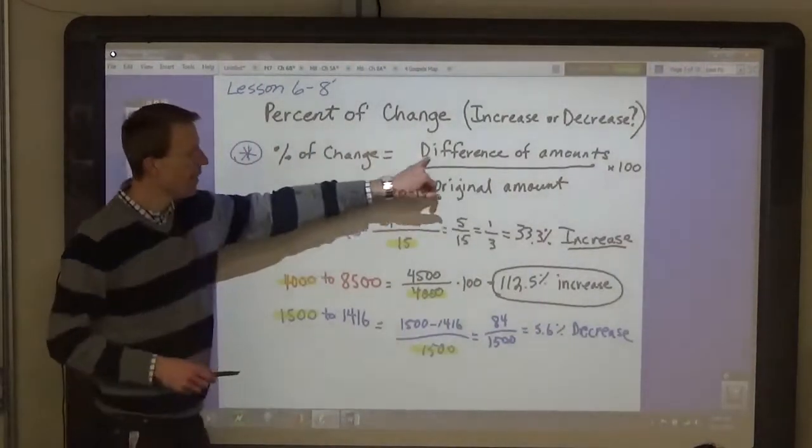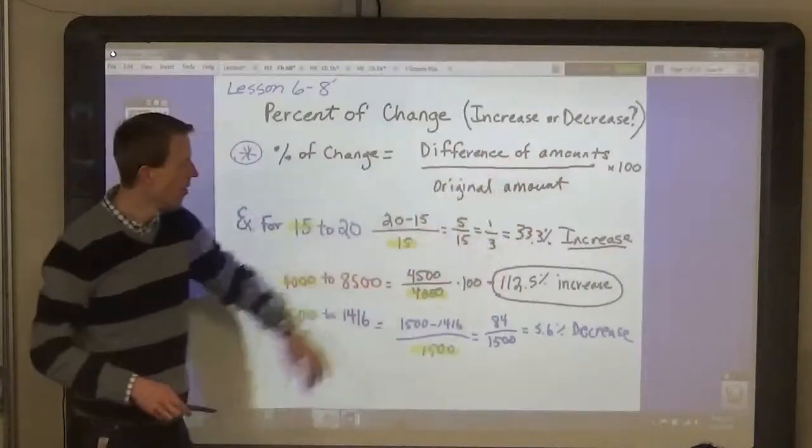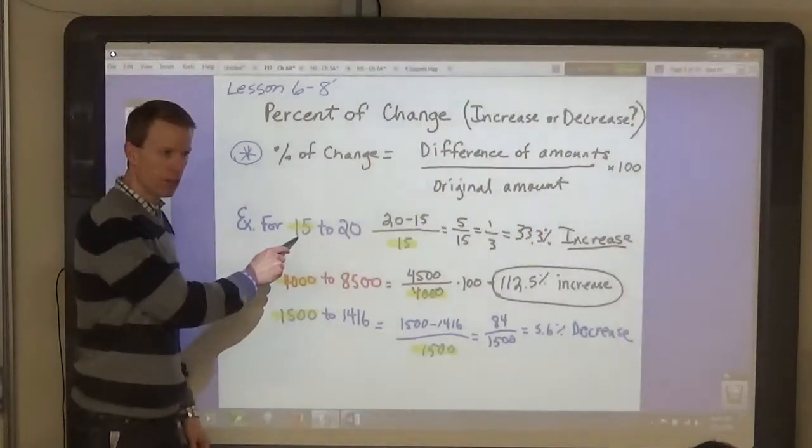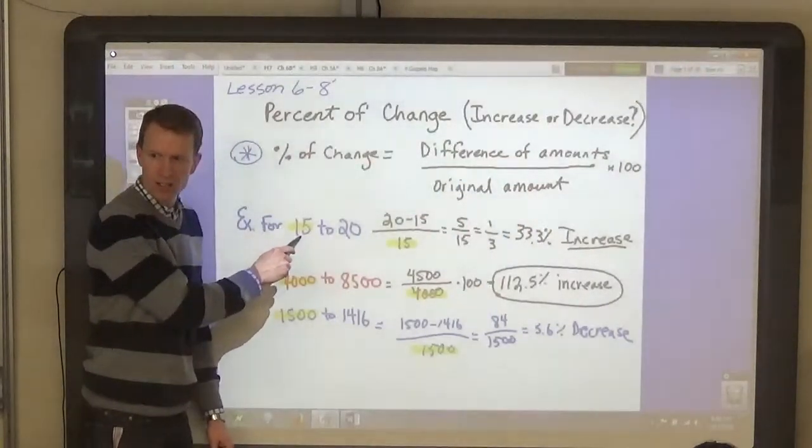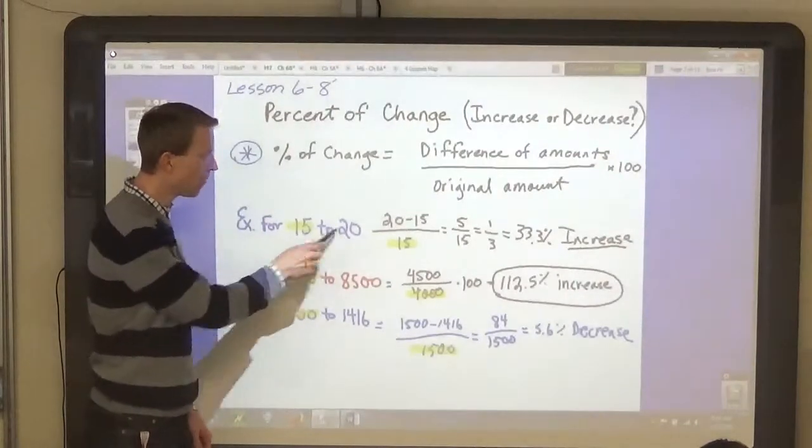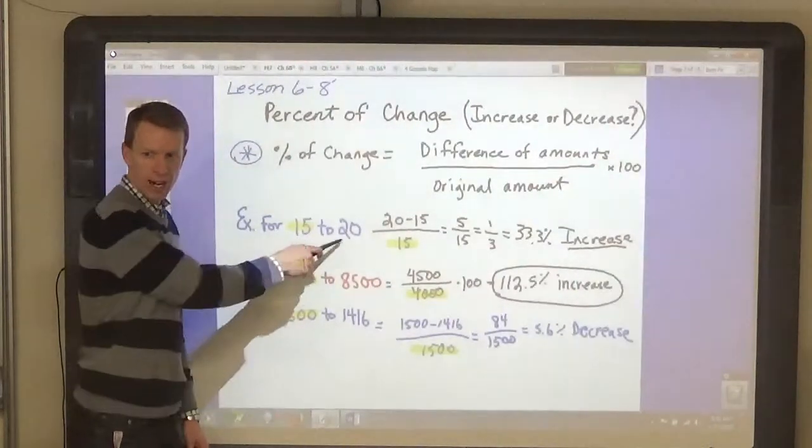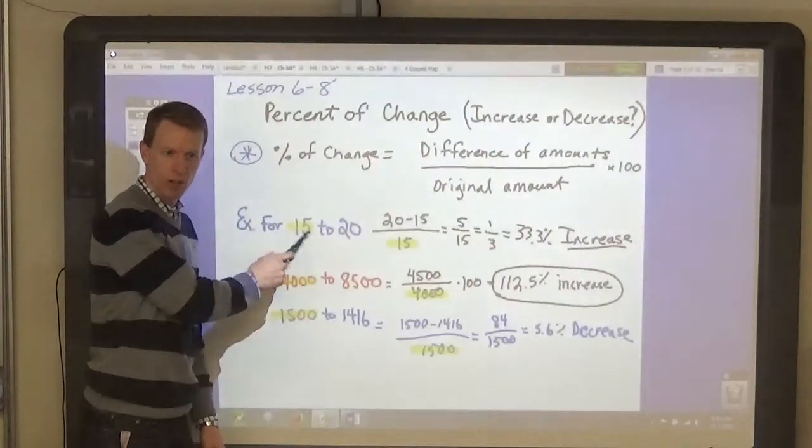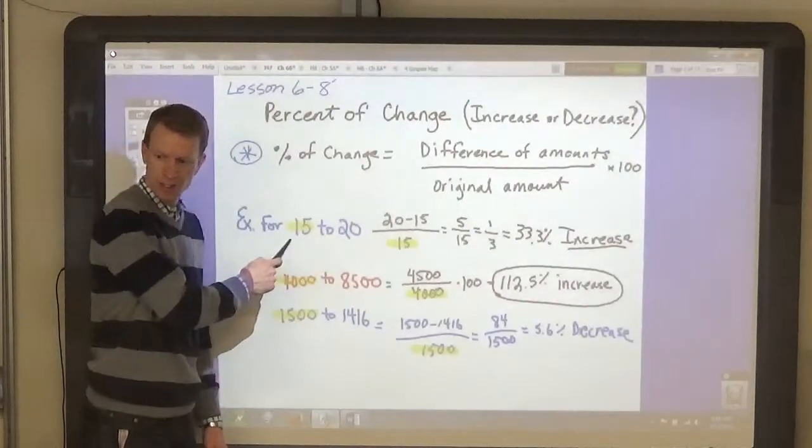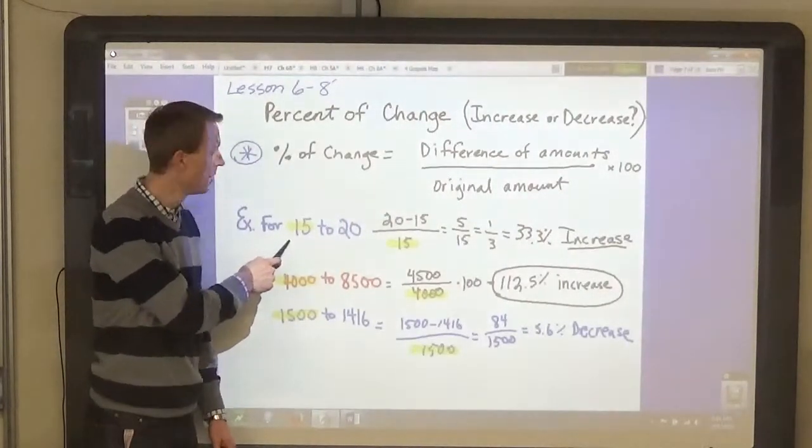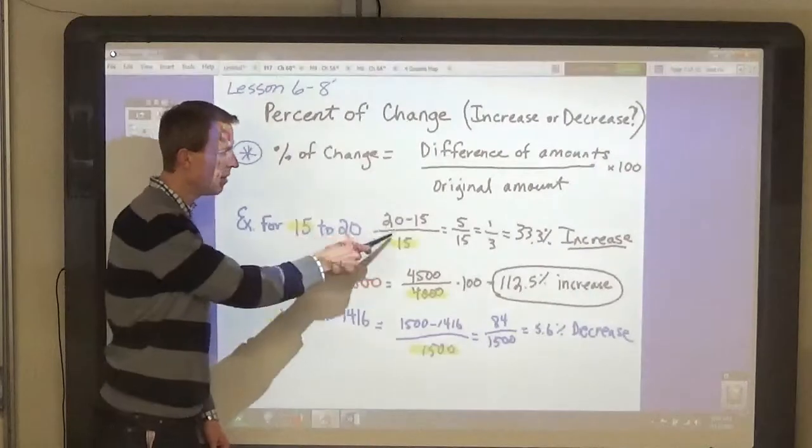You find the difference of the amounts. So if the amount that you're starting with is 15, you find the difference between the two. Subtract the bigger one minus the smaller one, or the bigger absolute value minus the smaller absolute value. 20 minus 15 is 5.